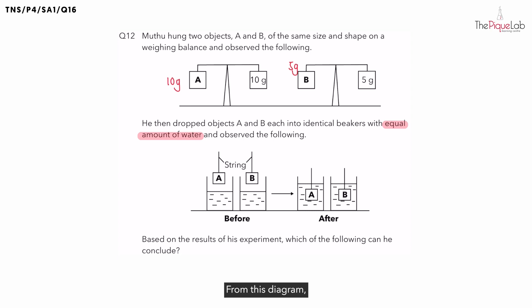From this diagram, we notice that the water level at the end of the experiment are the same for both of the beakers. Let me write this here. Since the water level for both beakers at the end of the experiment are the same, what does this tell us about the amount of water displaced by both objects? The amount of water displaced by both objects are the same. This means that both objects occupy the same amount of space in the beaker. Therefore, from this experiment, we can conclude that both objects have the same volume.